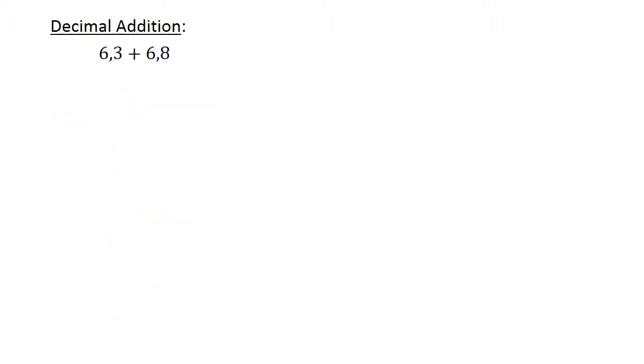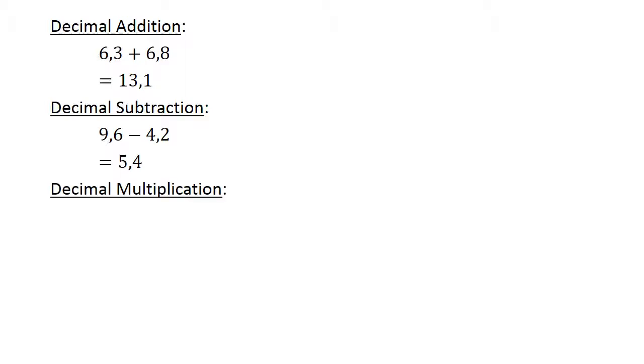Decimal addition: 6.3 plus 6.8 equals 13.1. Decimal subtraction: 9.6 minus 4.2 equals 5.4. Decimal multiplication: 0.2 times 0.03 equals 0.006.